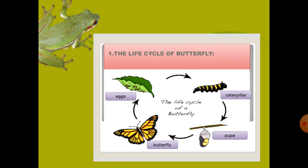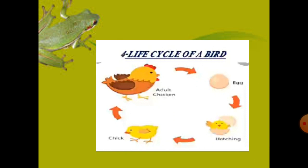Next is the life cycle of a bird, using the example of a chicken. An adult chicken lays eggs; the egg hatches into a chick; and the chick changes into an adult chicken. That was all about the life cycle of a few animals. The life cycle of an animal is all the stages in its life.